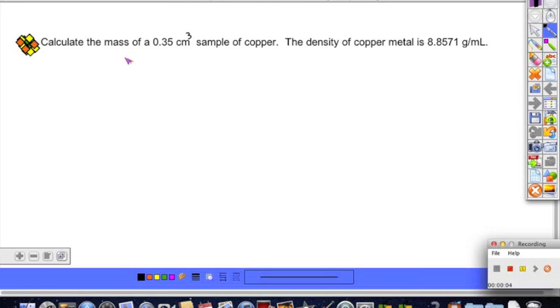Okay, here we have an example where we're going to use the density formula again, where we're asked to calculate the mass of a sample. The sample size is 0.35 cubic centimeters. The density of this substance, which is copper, is given to us.